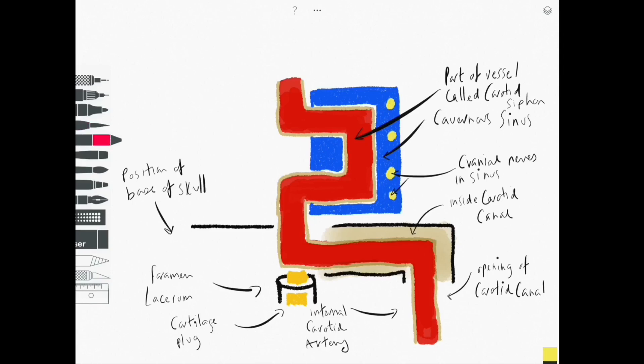So this is a clinically important area. If we had an aneurysm of the internal carotid artery here it could put pressure on those cranial nerves.